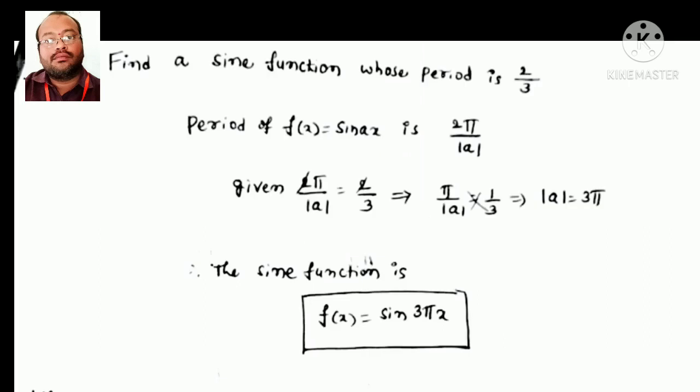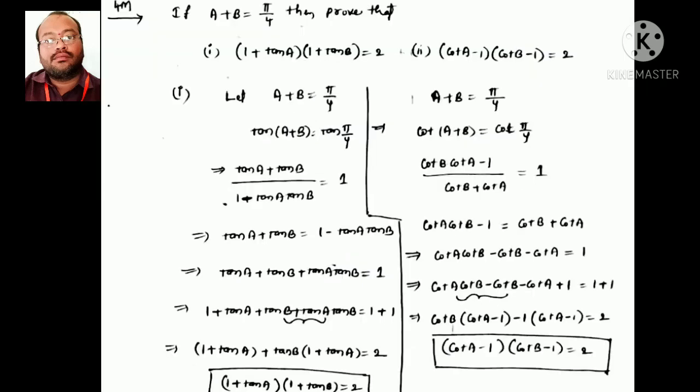Next: find the sin function where the period is given as 2/3. We know the period of sin(ax) is 2π/|a|. Setting 2π/|a| = 2/3 gives |a| = 3π. So the function is sin(3πx). This is very important for the annual exam.